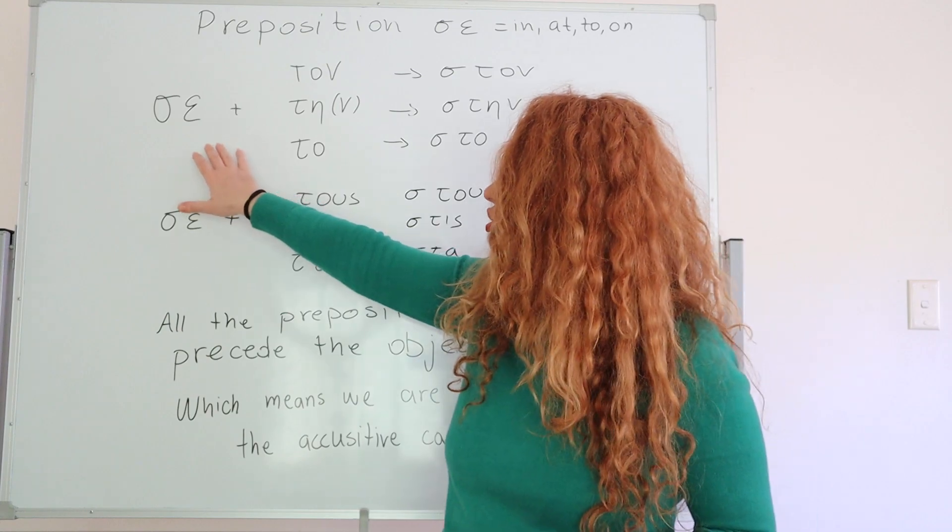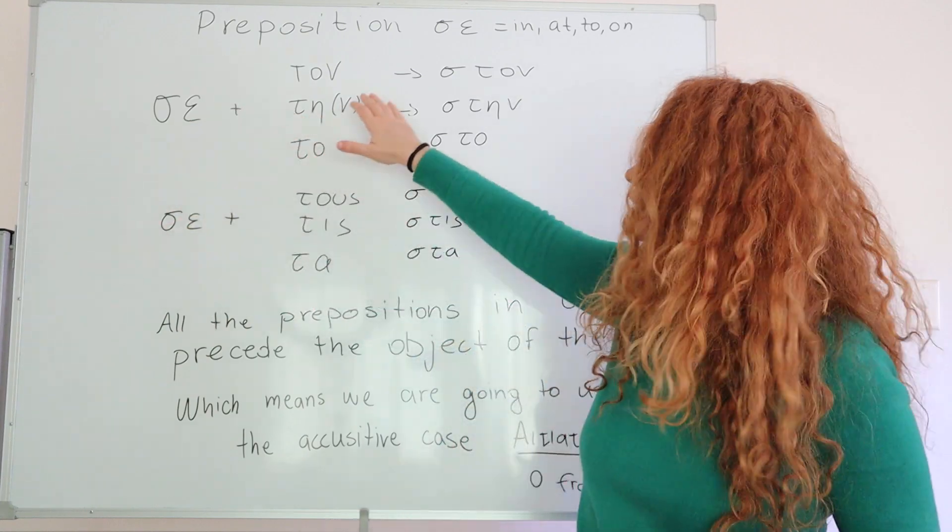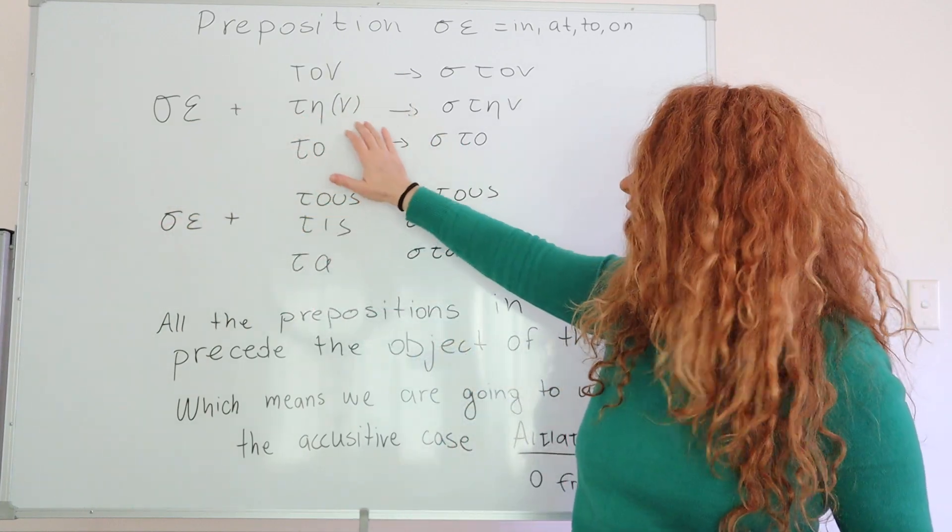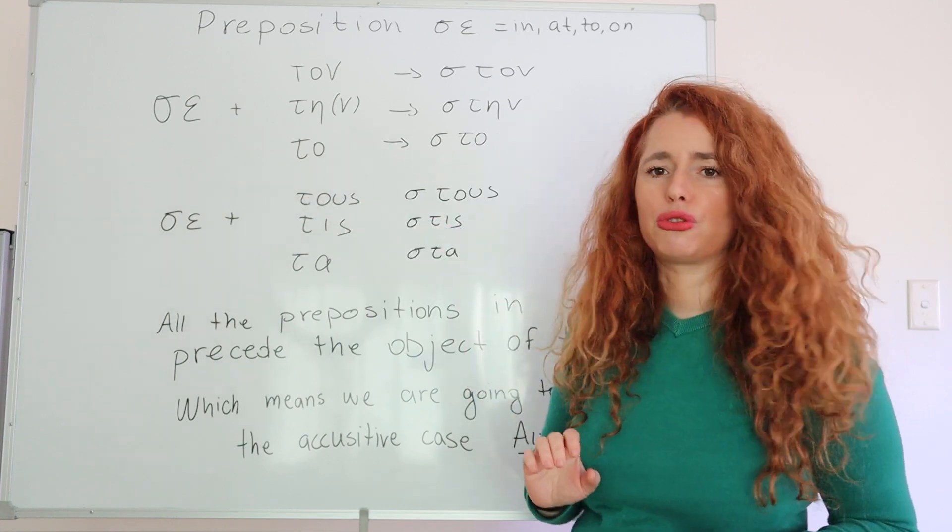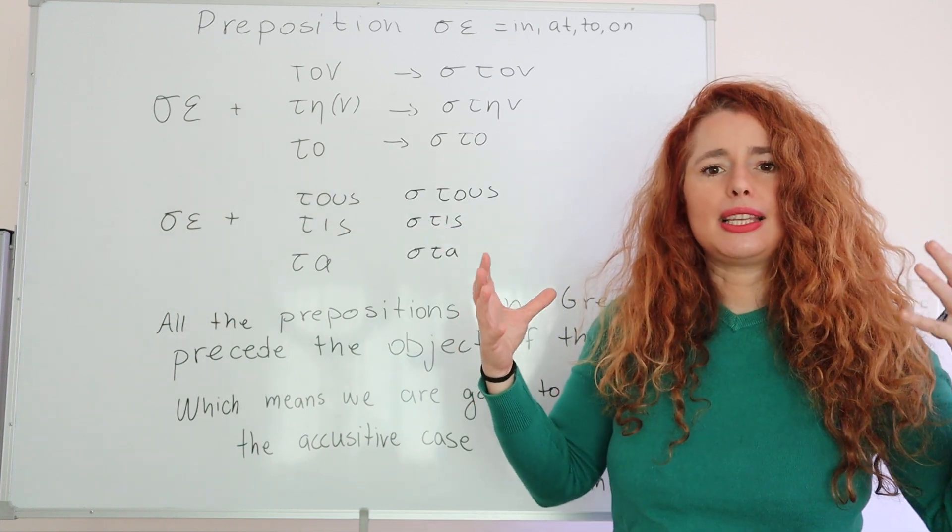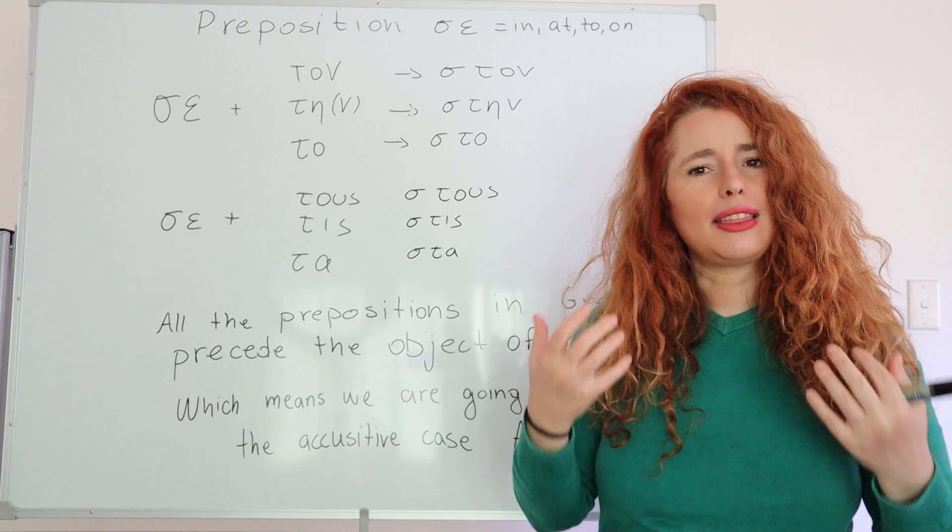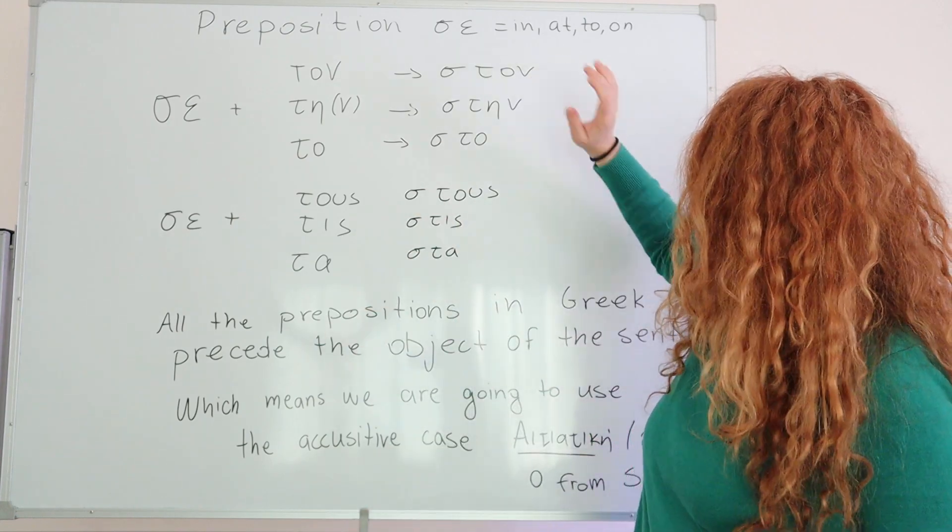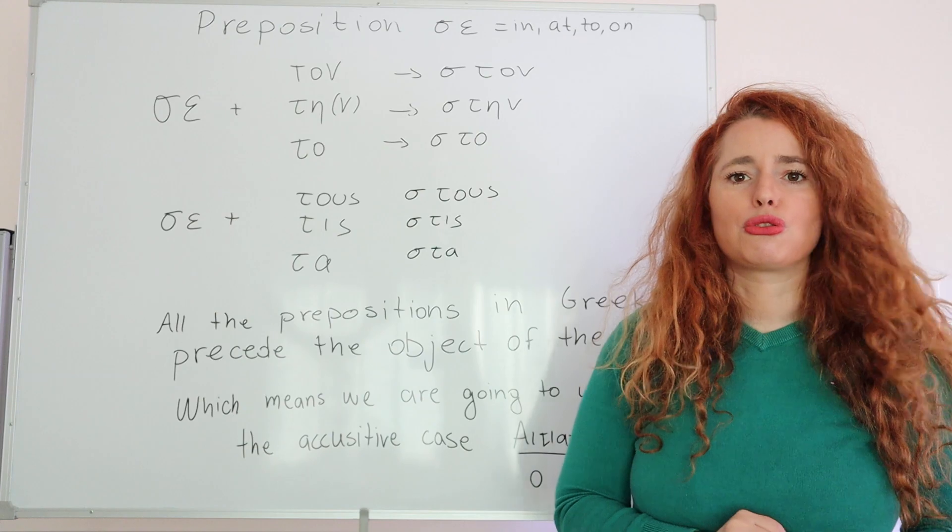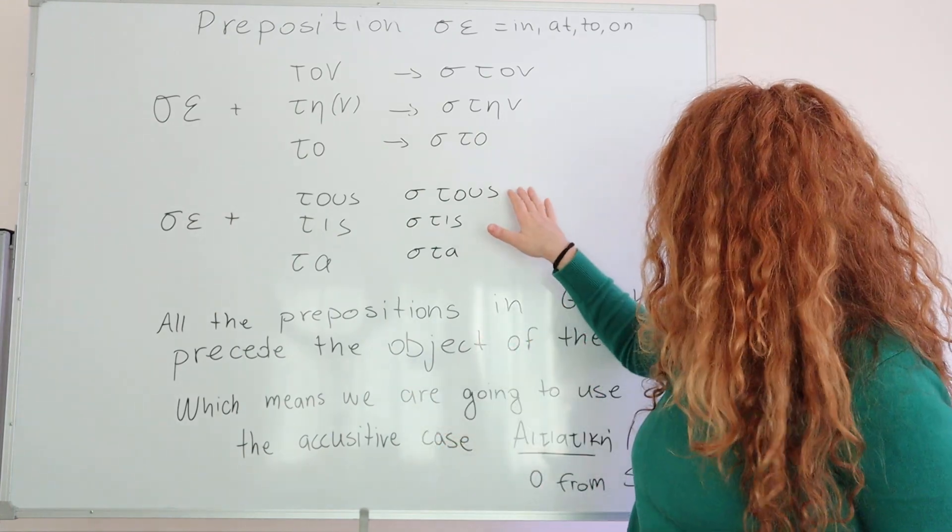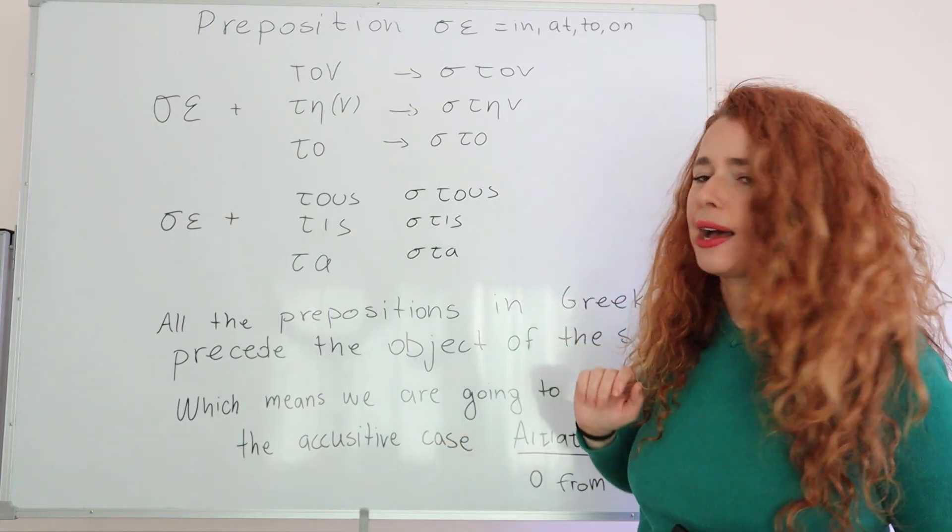So we have the prepositions SE plus the article TONE for masculine nouns, TI or TIN for feminine nouns and TO for neutral nouns. And what happens is that SE unites with the article and they create a new word. STONE for masculine nouns, TI for feminine nouns and STO for neutral nouns. The plural of it would be STUS, STIS and STA.